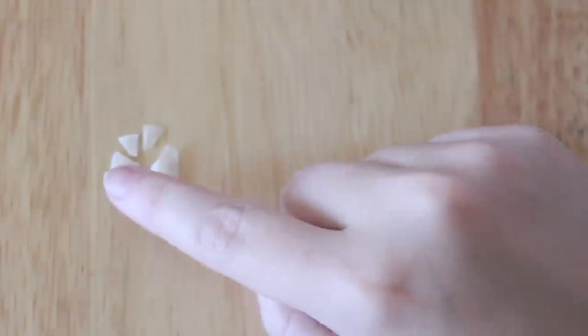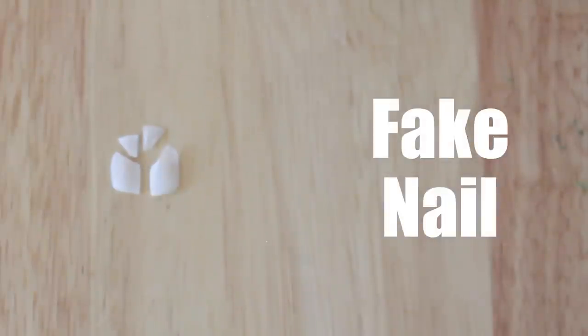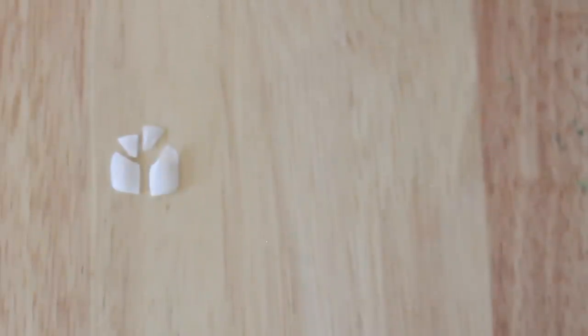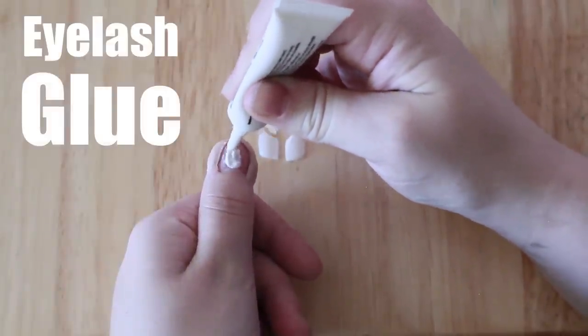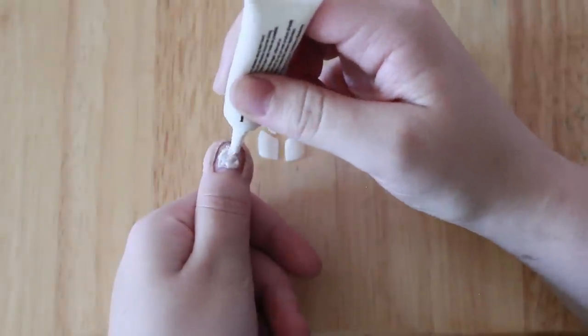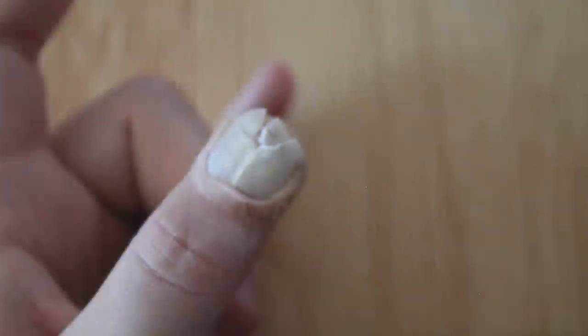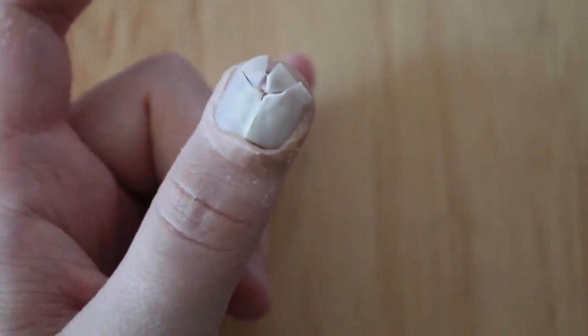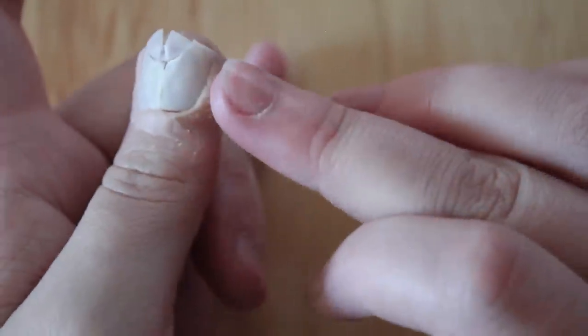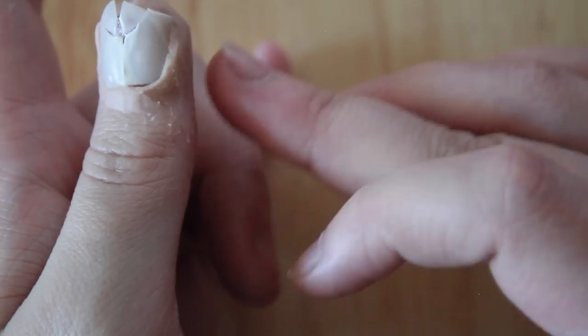To stick down the false nail there's two different things you can use. You can use nail glue or you can use eyelash glue. I prefer eyelash glue because it makes it a little easier to get everything off afterwards. Make sure that you press the false nail into the scar wax a little bit just to increase that look that the nail has just been smashed into your finger.